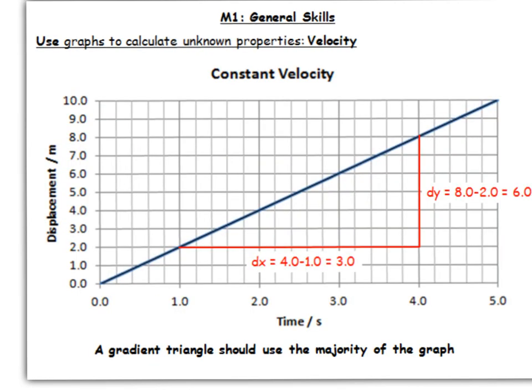So we've got a displacement against time graph, and this one is at constant velocity, because the rate of change, or the gradient of this graph, is constant.